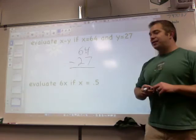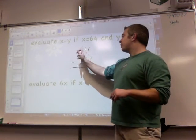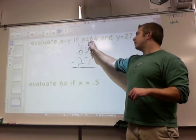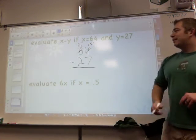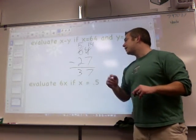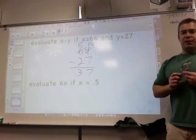4 minus 7 I can't do because I get a negative number. So I need to borrow from here. That 60 becomes 50 and 4 becomes 14. I stole 10 away. 14 minus 7 is 7. 50 minus 20 is 30, or 5 minus 2 is 3. My answer is 37.